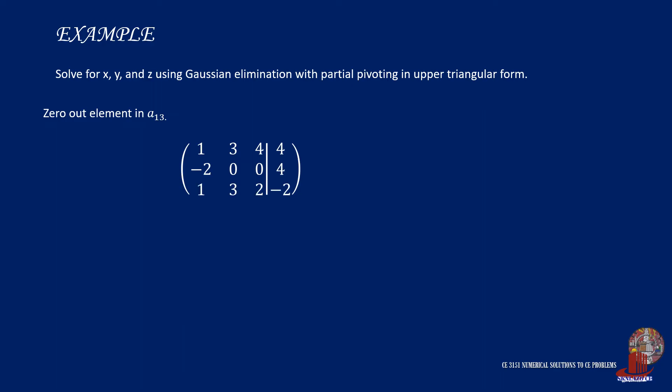Elimination of other elements in the third column moves to the first row by taking row 1 minus twice of row 3 for the new row 1. Starting with a11, we have 1 minus twice of 1 giving negative 1.